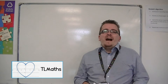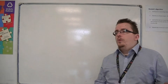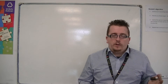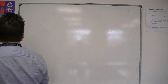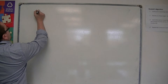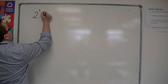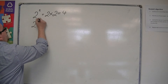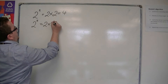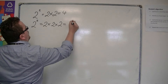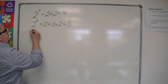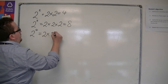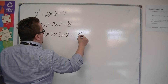In this video we're going to look at powers, also called indices. You will have seen them — 2 squared means 2 times 2, which is 4. And 2 cubed is 2 times 2 times 2, which is 8. We could also have 2 to the 4, which is 2 times 2 times 2 times 2, which is 16.